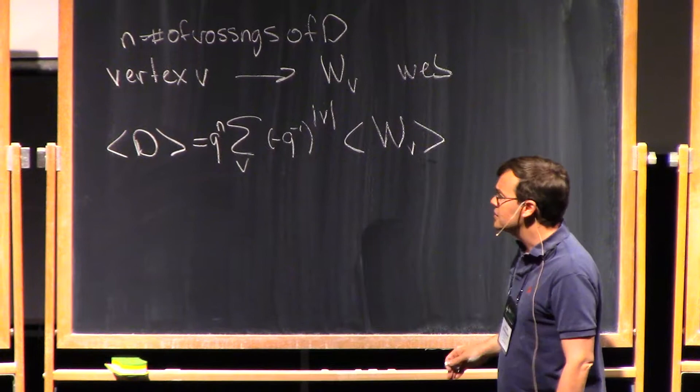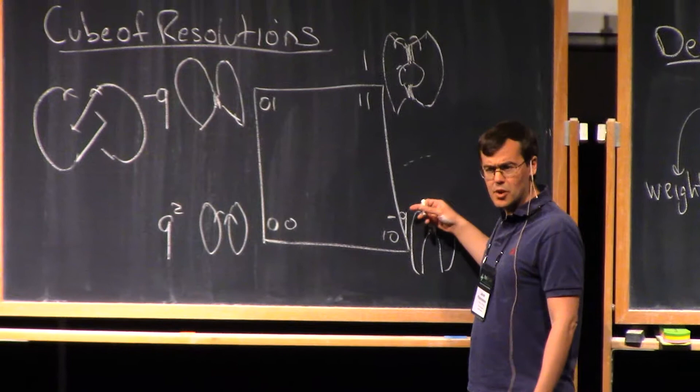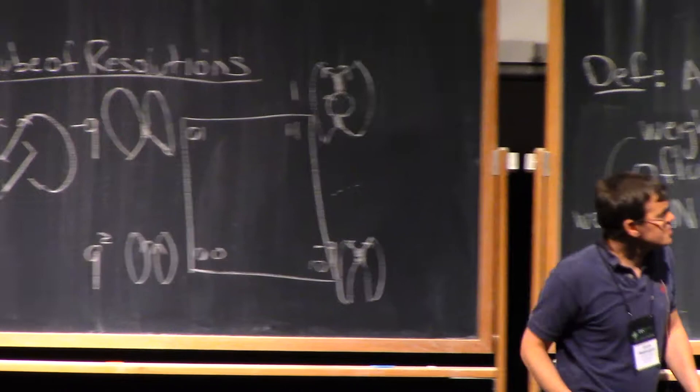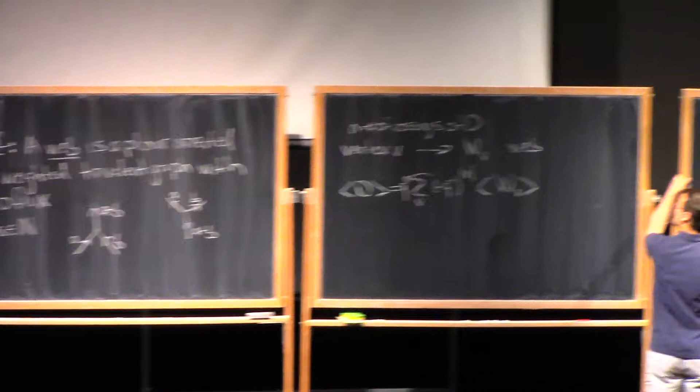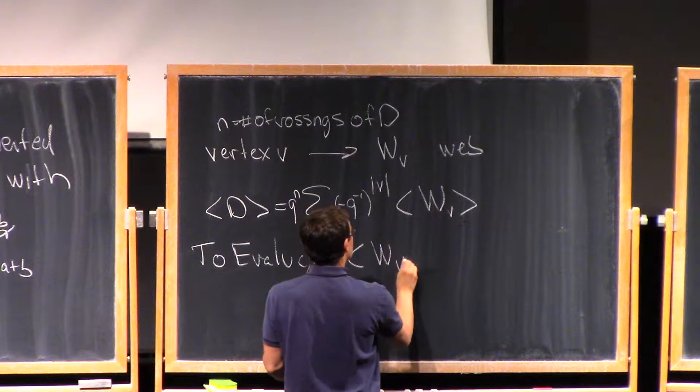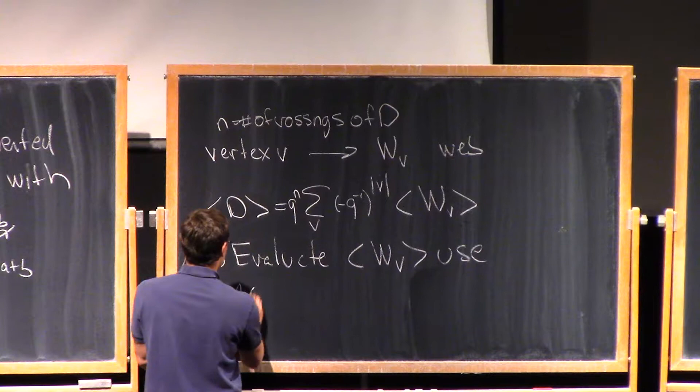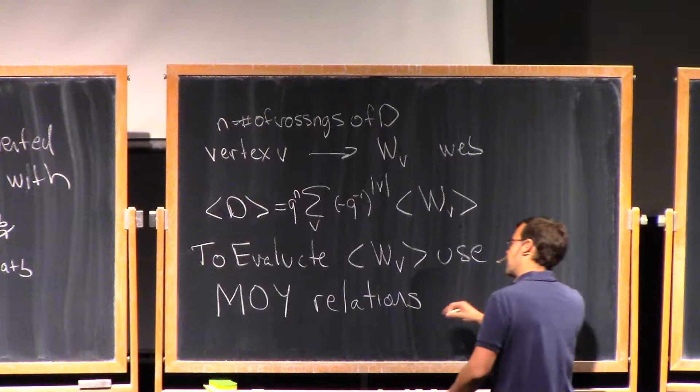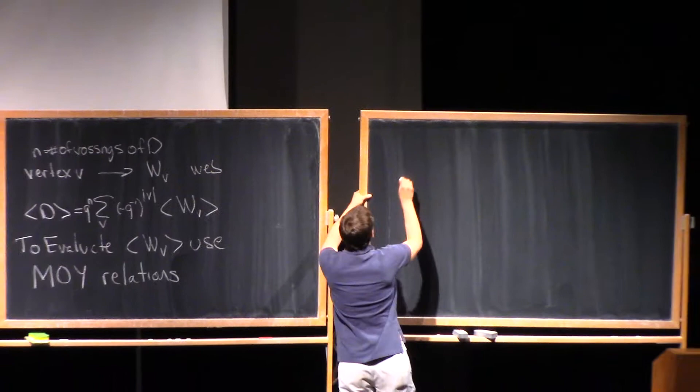Now what do I do? Before when I was doing the Jones polynomial it was pretty clear what I did. I just counted the number of circles and took Q plus Q inverse to that number and that was how I evaluated these diagrams. But now I have diagrams with these thick edges. It's not quite as clear what's going on. So let's say it this way.